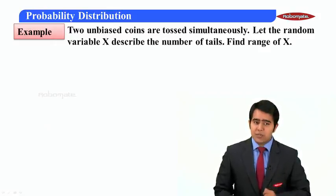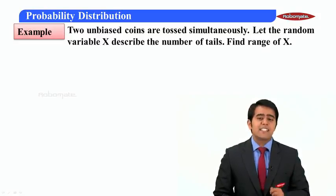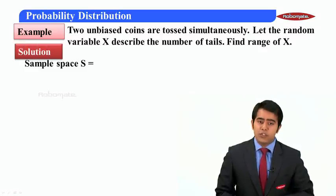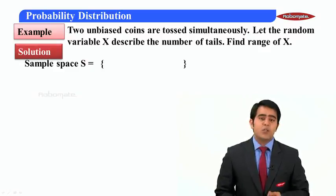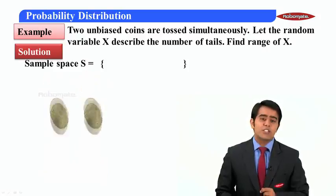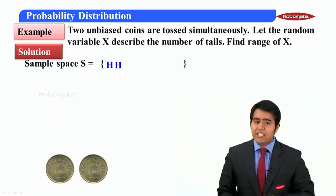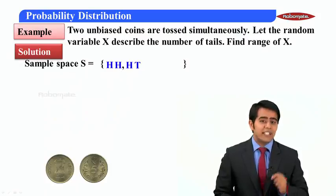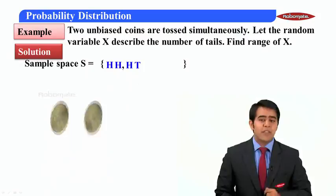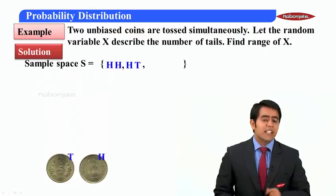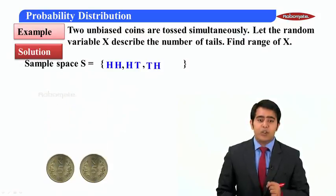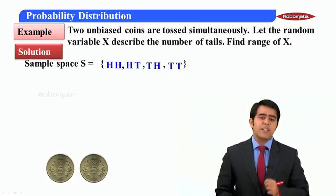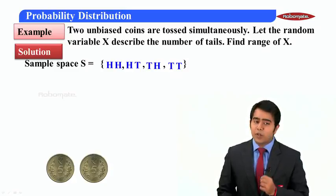Let us understand this with an example. Two unbiased coins are tossed simultaneously. Let the random variable x describe the number of tails. Find the range of x. First we require the sample space S. The outcomes are: HH (both heads), HT (first head, second tail), TH (first tail, second head), and TT (both tails).